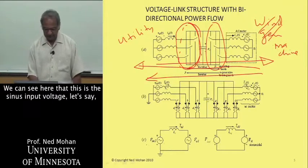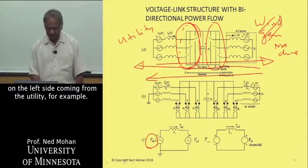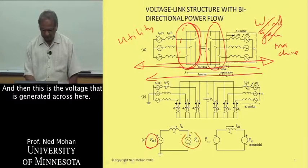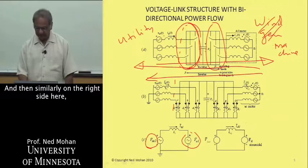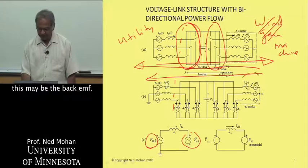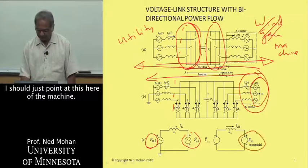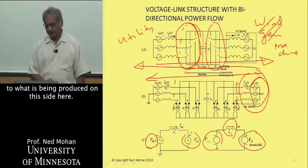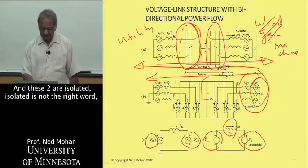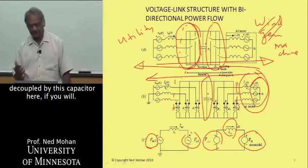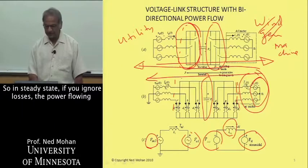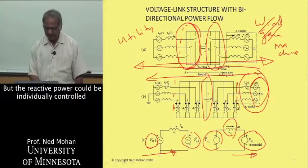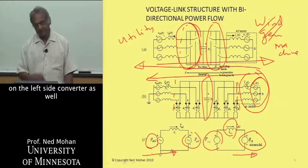We can also look at what happens on a per-phase basis on the left side and on the right side. This is the sinusoidal input voltage on the left side coming from the utility, for example. And then this is the voltage that is generated across here. Similarly on the right side, this may be the back EMF of the machine and then this inductance of the machine. These two are decoupled by this capacitor here. In steady state, if you ignore losses, the power flowing in has to be power flowing out, real power. But the reactive power could be individually controlled on the left side converter as well as on the right side converter.